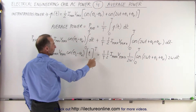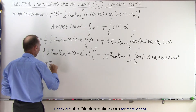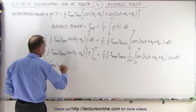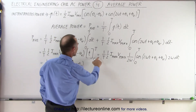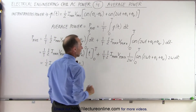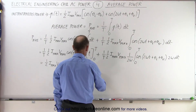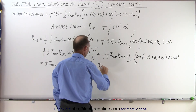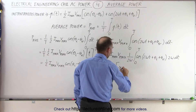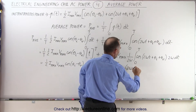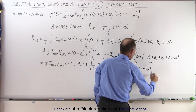When we plug in the limits on the first integral, we get a t in the numerator which cancels with the 1 over t, and we end up with ½ i_max v_max times the cosine of (θ_i minus θ_v). For the second term, we have 1 over t times 1 over 4ω times i_max v_max times the sine of (2ωt + θ_i + θ_v), evaluated from 0 to t.